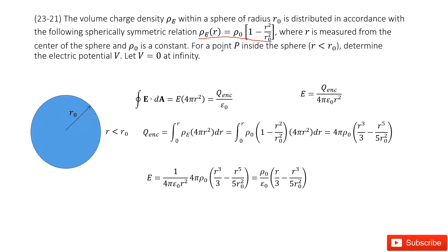And then we need to find a point P. This P is inside this spherical object, so we can see it is there. R is smaller than R₀. We need to determine its electric potential, and also at infinity V equals 0. So how can we do that?